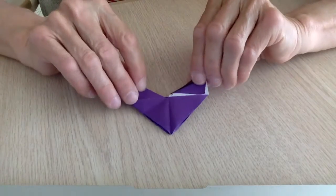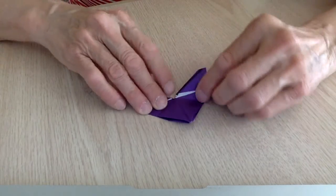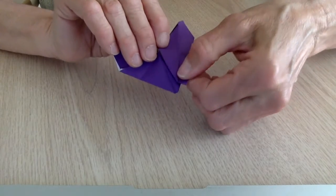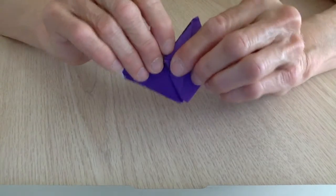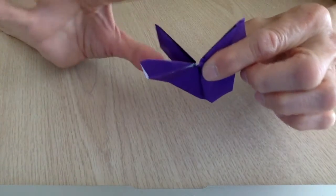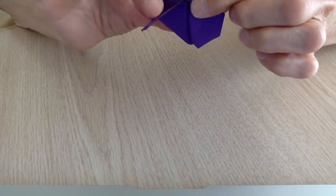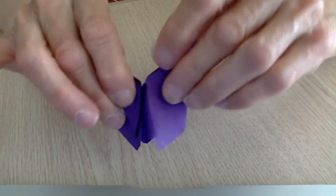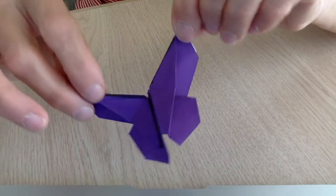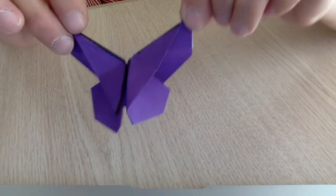You'll end up with this. All you need to do then is take and lower the flap. Over here, just take and lower the flap, and you have your butterfly.